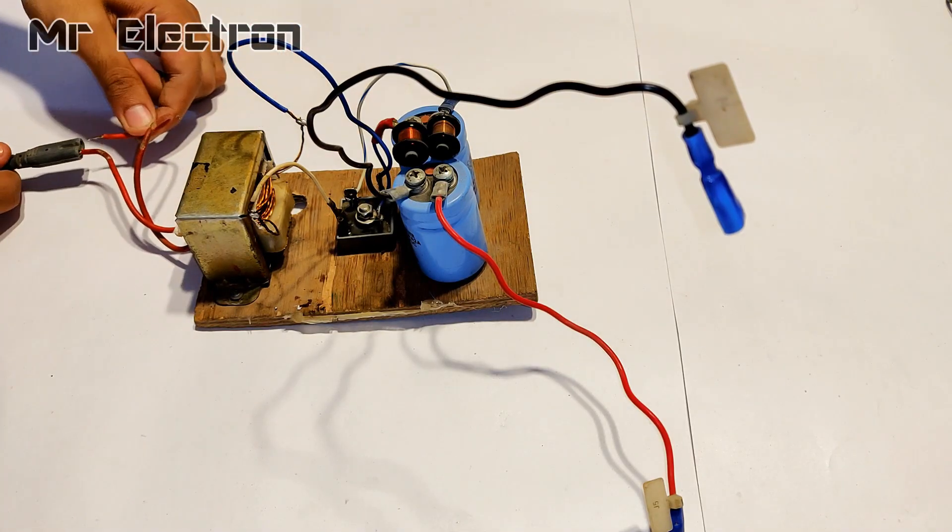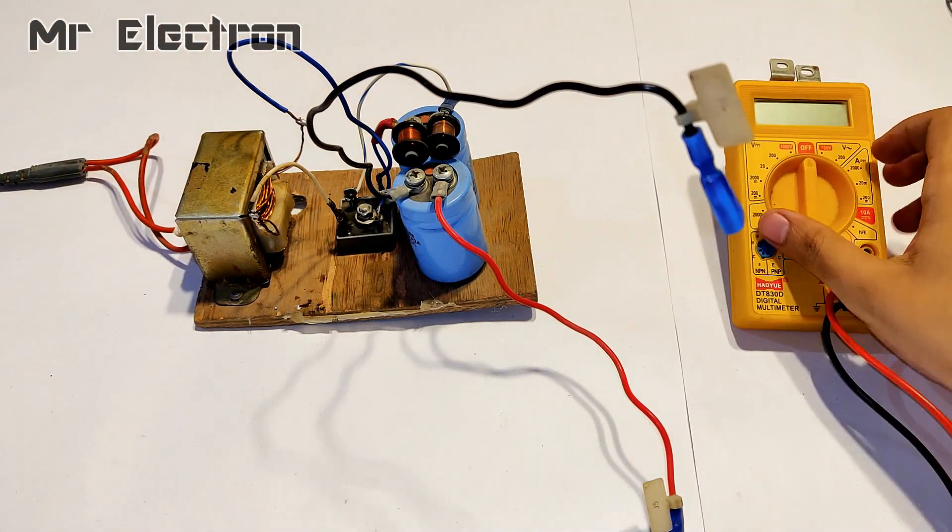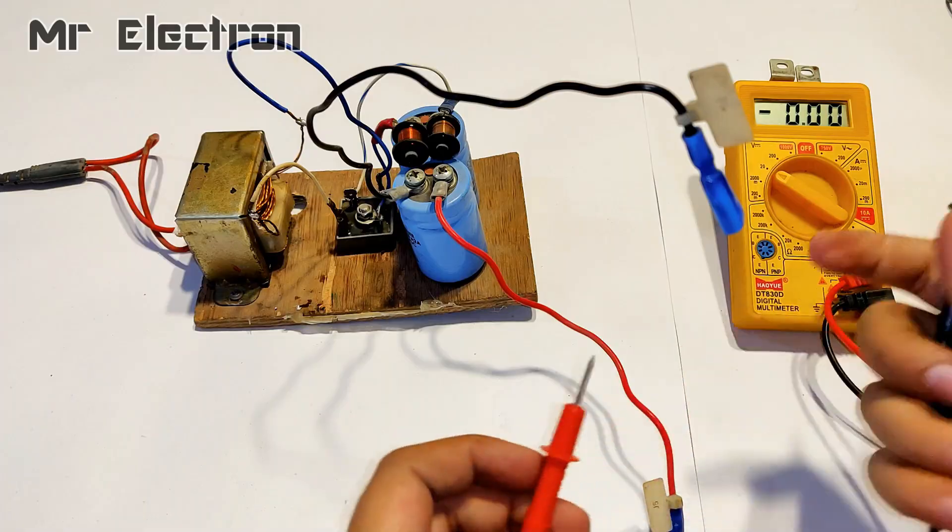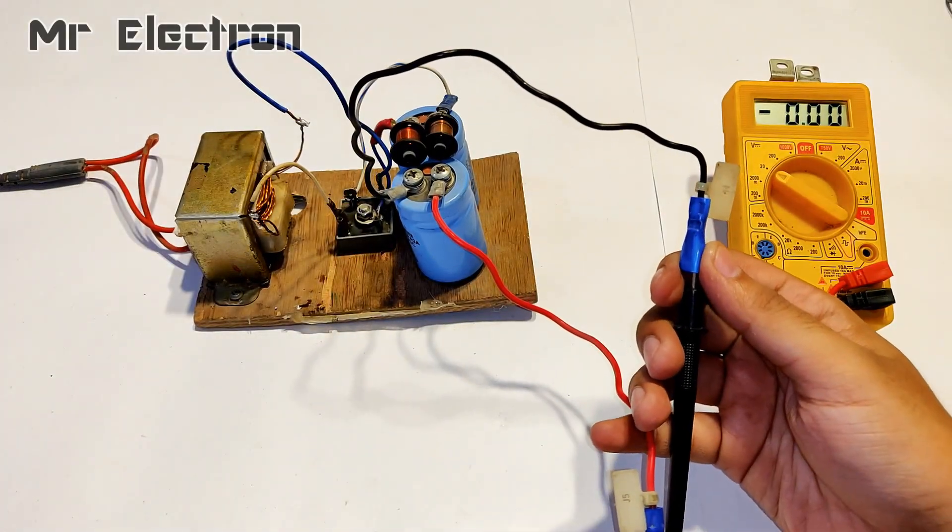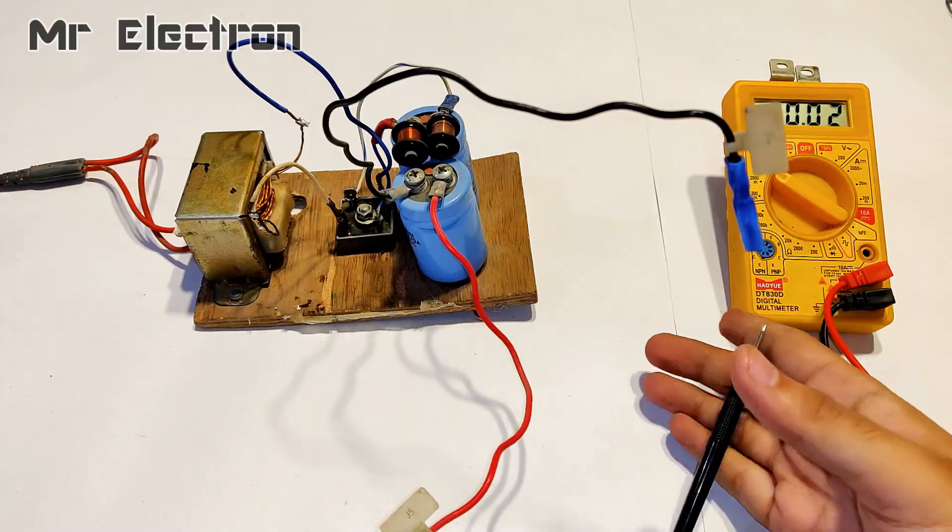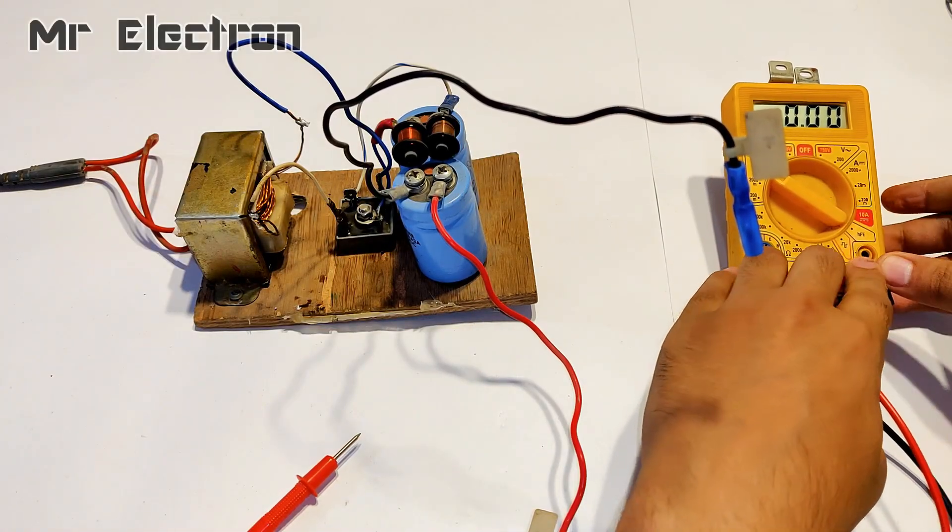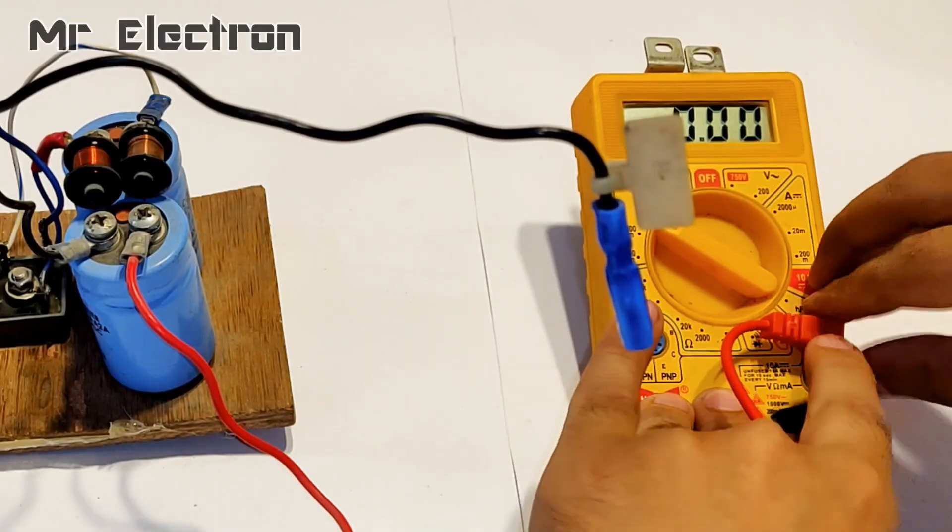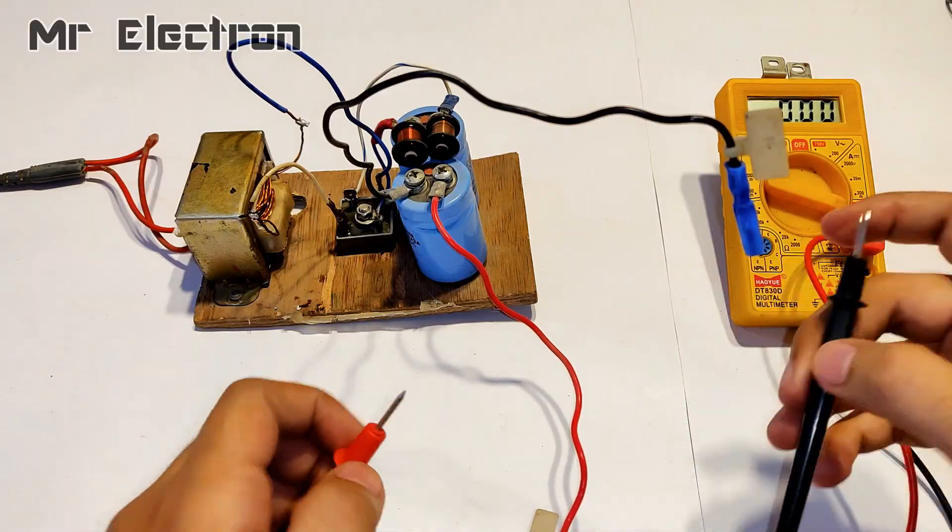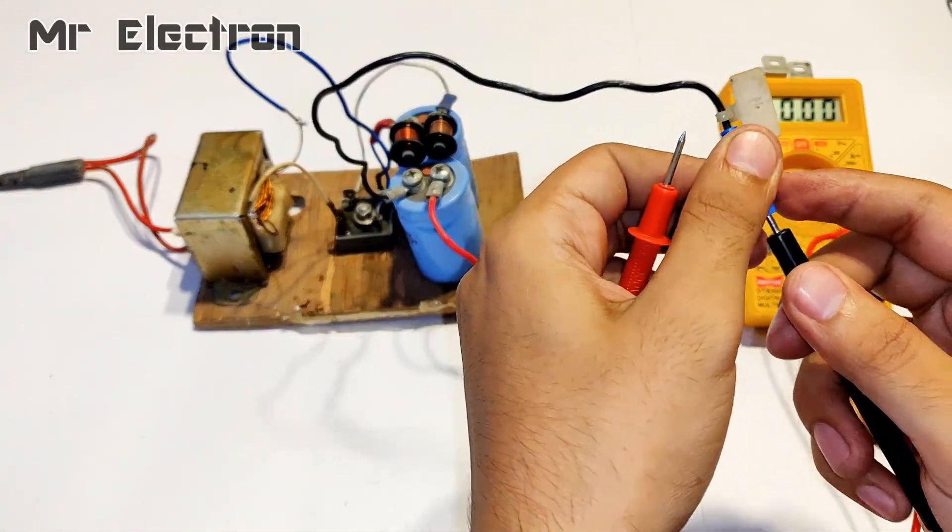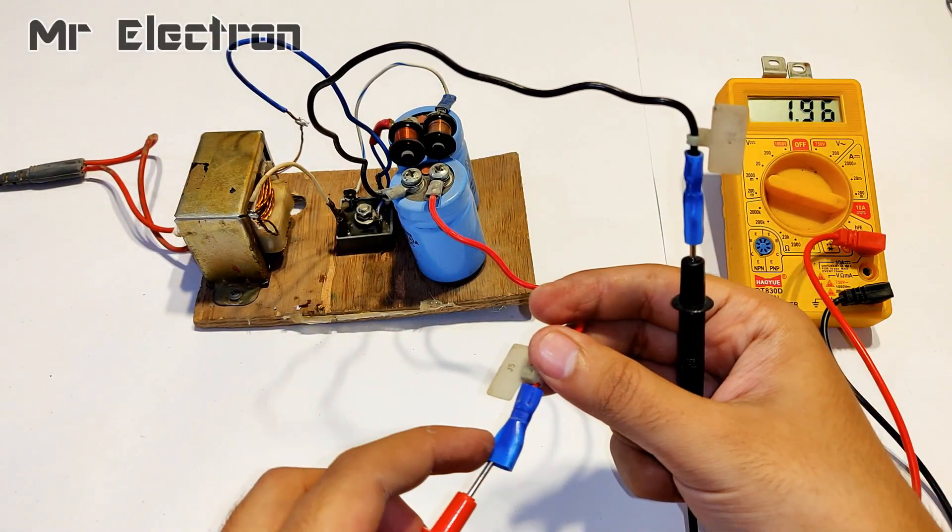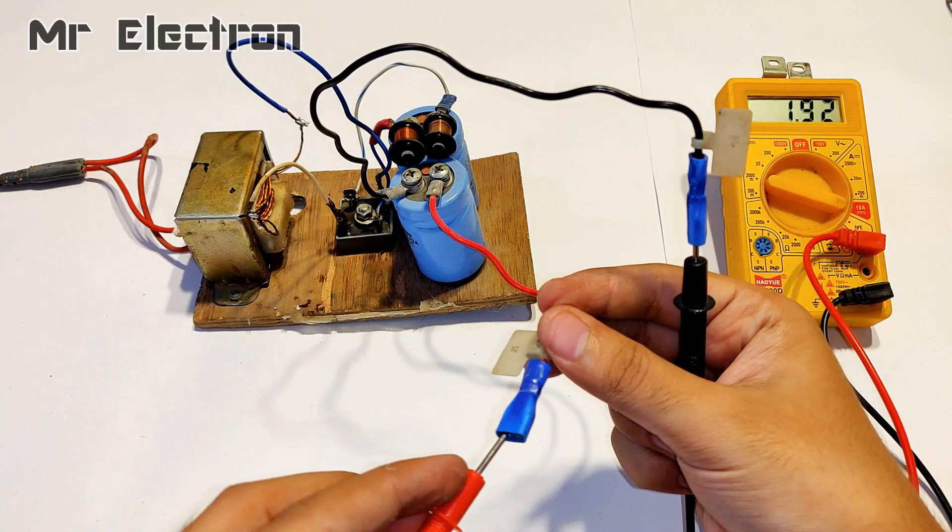So guys as you can see that I have given 220V input supply to the transformer and the output on the capacitor is showing 4.10V. Now what I am doing is measuring the overall short circuit current at which the supercapacitor is going to get charged. Which is 1.94A, almost 2A.